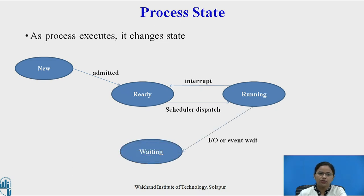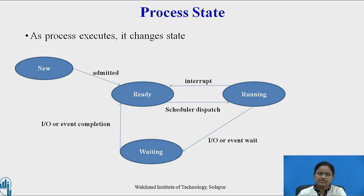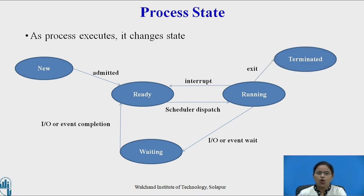Similarly, while executing, an input-output event may occur. When an I/O event occurs, the process must enter the waiting state. When the I/O event completes, the process moves from the waiting state back to the ready state. Again, when the process is in the ready state, it is scheduled by the scheduler and can enter the running state. When a process completes its execution, its state is 'terminated.' These are all the process states, from new to terminated.